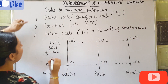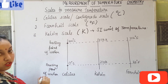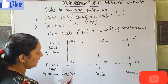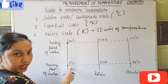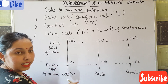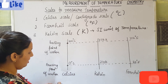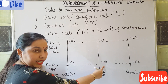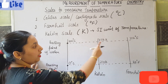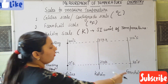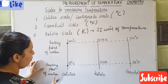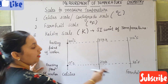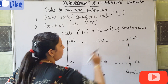Let's compare all these scales for the case of water. The freezing point of water on the Celsius scale is 0°C, and the boiling point is 100°C. On the Kelvin scale, the freezing point is 273 K and the boiling point is 373 K. On the Fahrenheit scale, the freezing point is 32°F and the boiling point is 212°F.